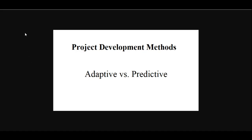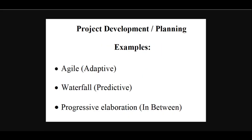Adaptive methods focus on adapting quickly to changing realities. Predictive methods, in contrast, focus on analyzing and planning the future in detail, and cater for known risks.